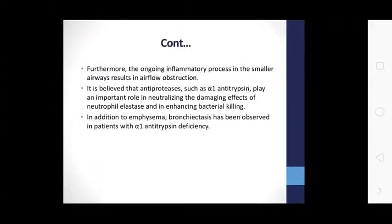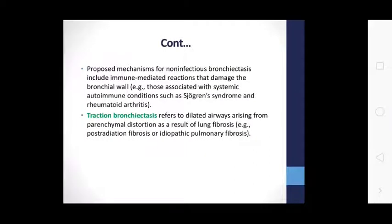Chronic inflammation destroys the elastin and cartilage, which causes dilation and weakening of the bronchial walls. The ongoing inflammatory process of the smaller airway results in airflow obstruction. It is believed that anti-proteases such as alpha-1-antitrypsin play an important role in neutralizing the damaging effects of neutrophil elastase and enhancing bacterial killing. Emphysematous bronchiectasis has been observed in patients with alpha-1-antitrypsin deficiency.